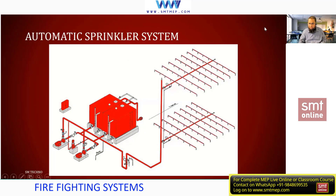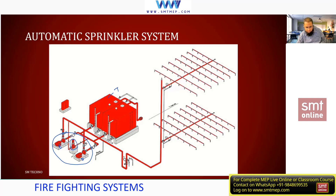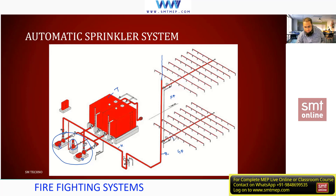Next is the sprinkler system. The detail will be found in NFPA 13 after completing NFPA 10. The components include a tank, pump sets — one electric pump, one diesel pump, and one jockey pump. There is a separate module for pumps under NFPA 20. After the tank and pumps, the main pipe is called the header. The vertical pipe is called the riser, and the horizontal pipe entering each floor is called the cross main.